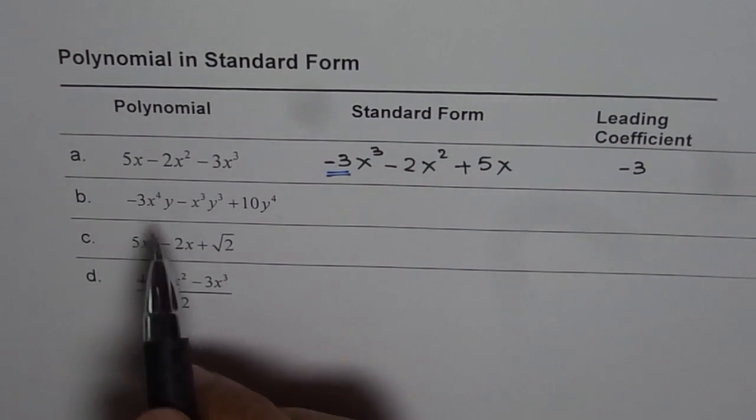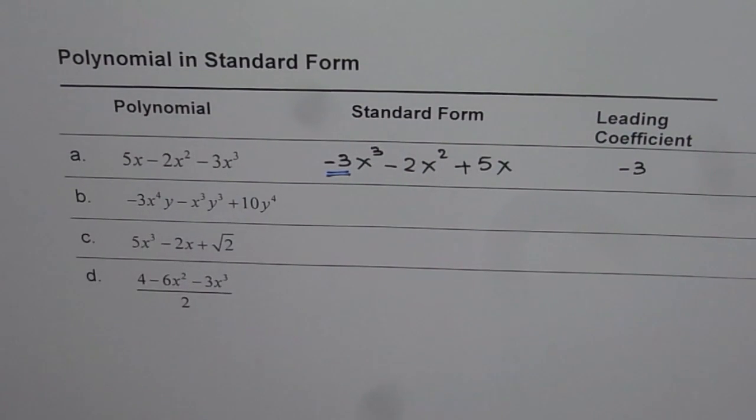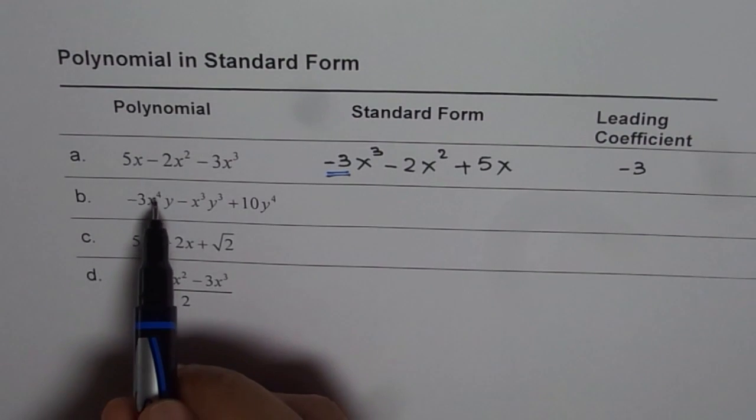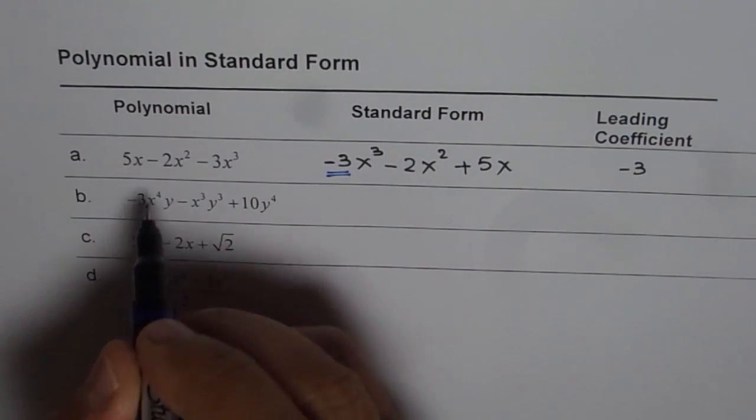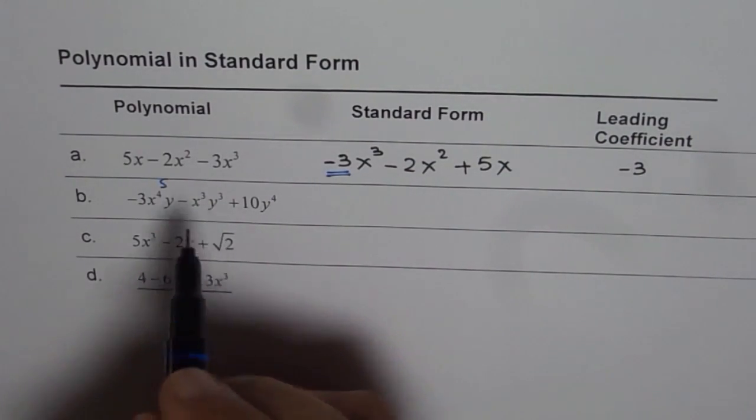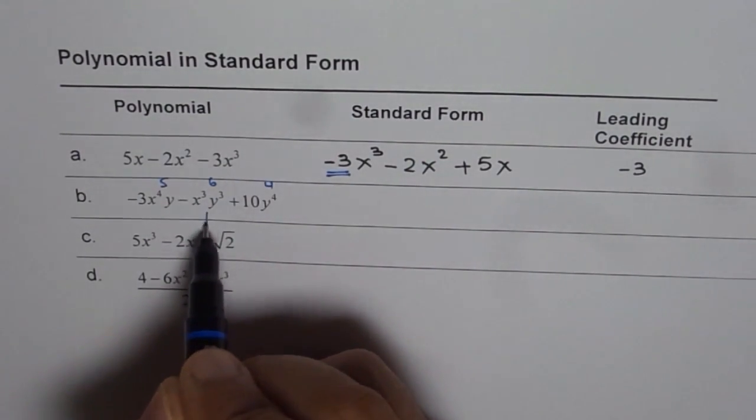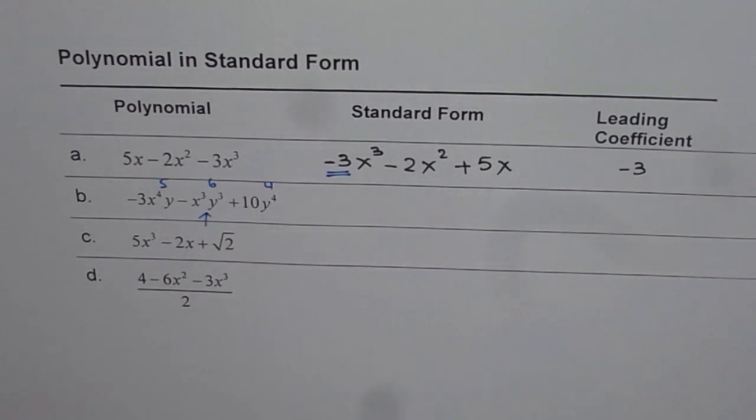Now let's do part b. In part b, we have a polynomial with two variables. Let us calculate the degree of each term. 4 plus 1 is 5, so the degree is 5 for the first term. 3 plus 3 is 6. And then we have 4. So clearly, 6 is the highest degree.